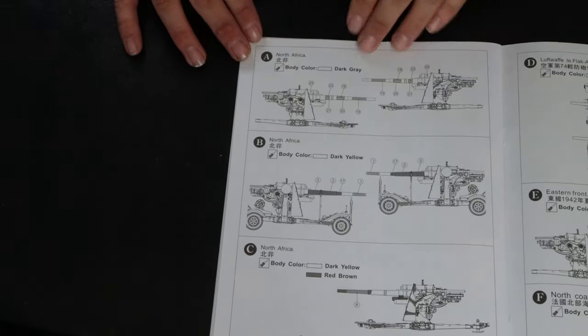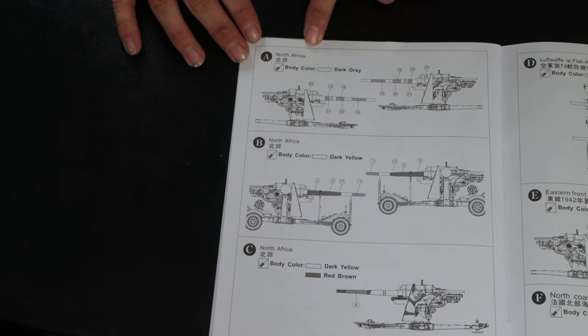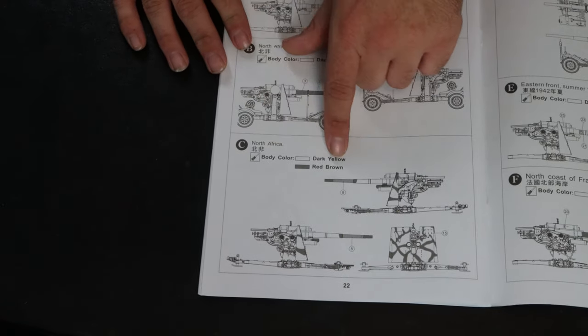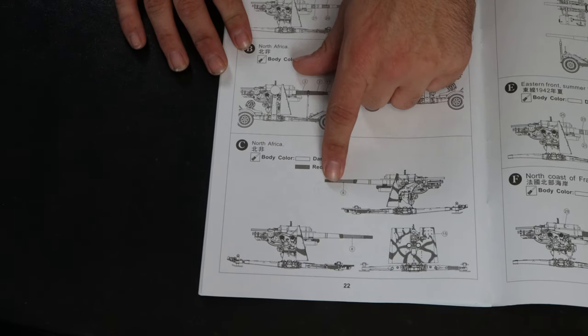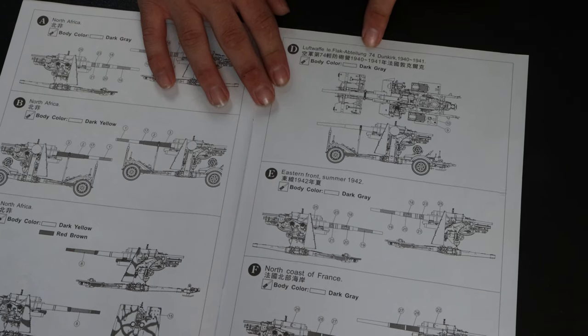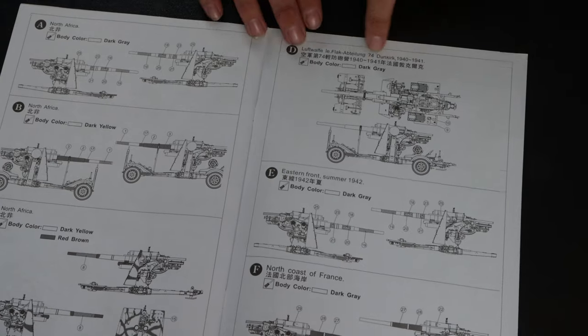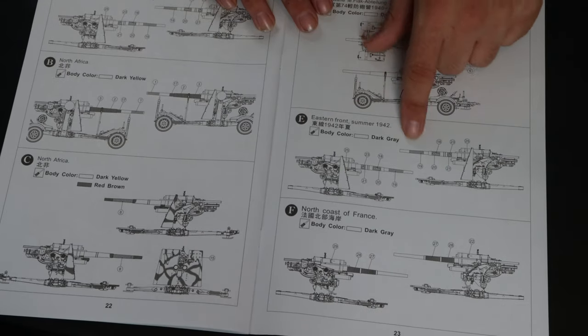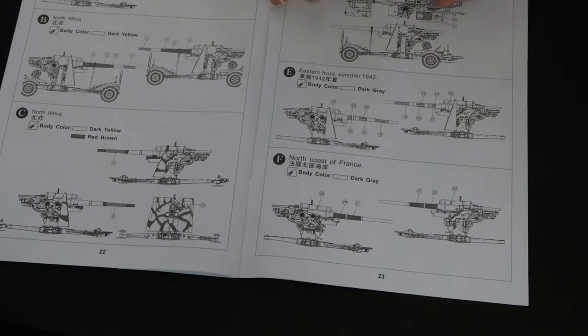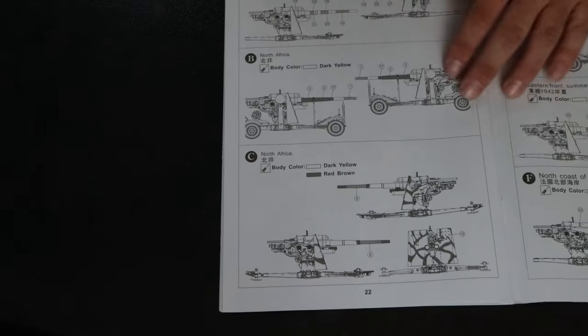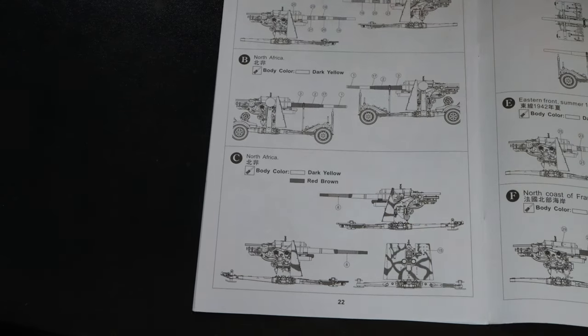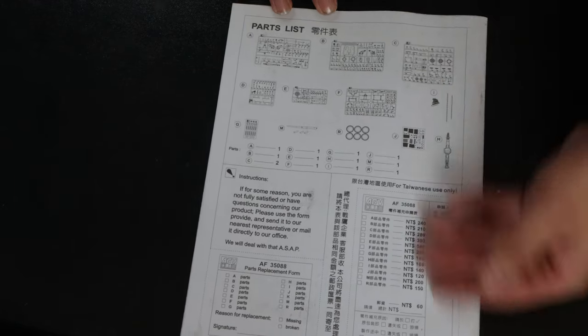And then finally we get to the different markings. So there's one for North Africa which is dark gray, another North Africa in dark yellow, another North Africa dark yellow and some red brown on the end of the gun. And then here's the Luftwaffe, Dunkirk, so dark gray, and then the Eastern Front '42 in a dark gray, and north coast of France again in a dark gray. So I'm probably going to do it in one of the dark gray colors, or maybe even that, that'd be pretty cool. But I don't know if I want to do camo on the shield. That might be a little hard. I haven't decided. And then the back just gives you a parts list and stuff.